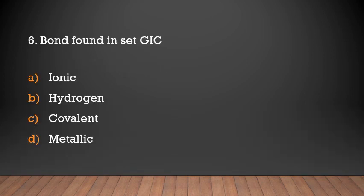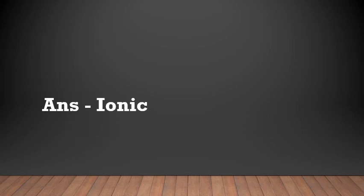Bond found in GIC: (a) ionic, (b) hydrogen, (c) covalent, (d) metallic. Answer: Ionic bond is found in GIC.